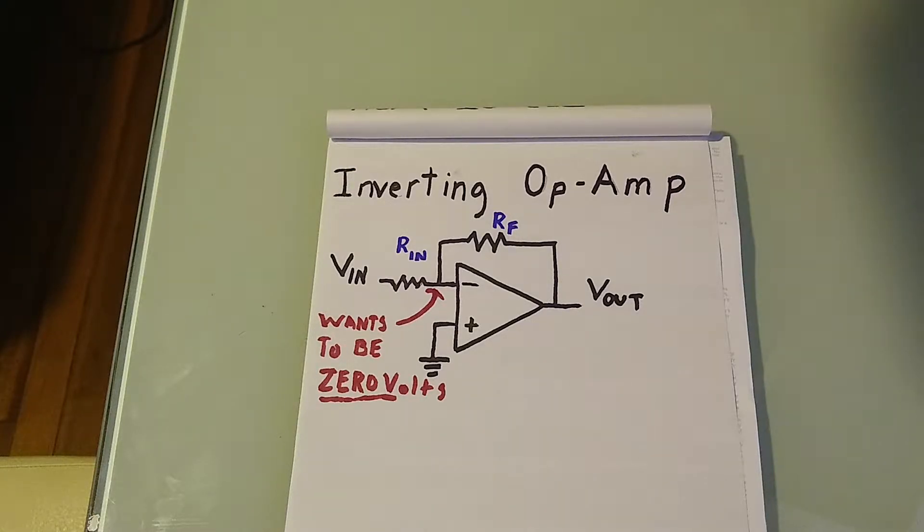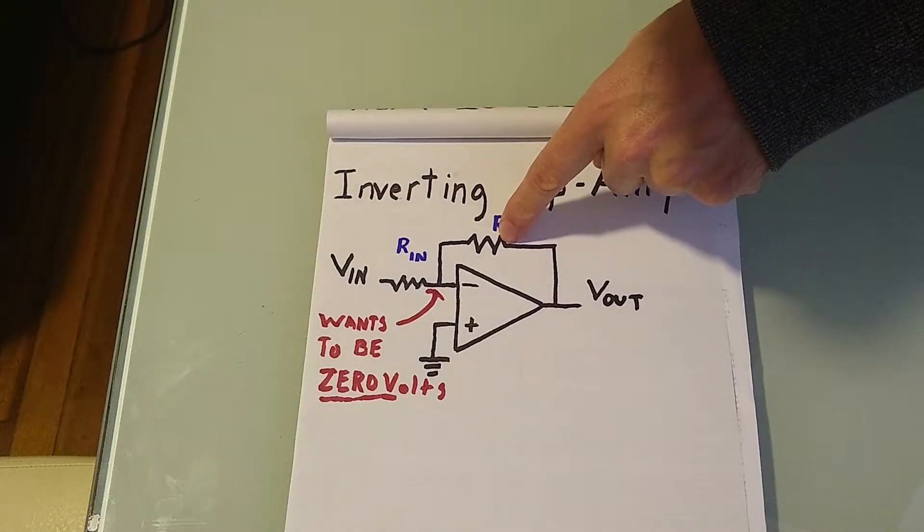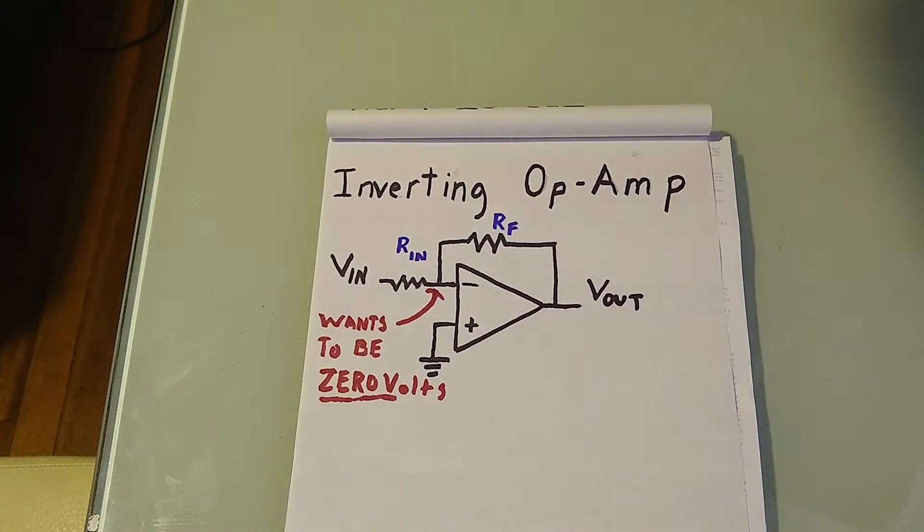The gain of an amplifier could theoretically be a million times or more. That is, it can multiply the input voltage you apply to it by one million or more times. This, however, would be highly unstable, so we use a feedback resistor across the amplifier to control the gain.